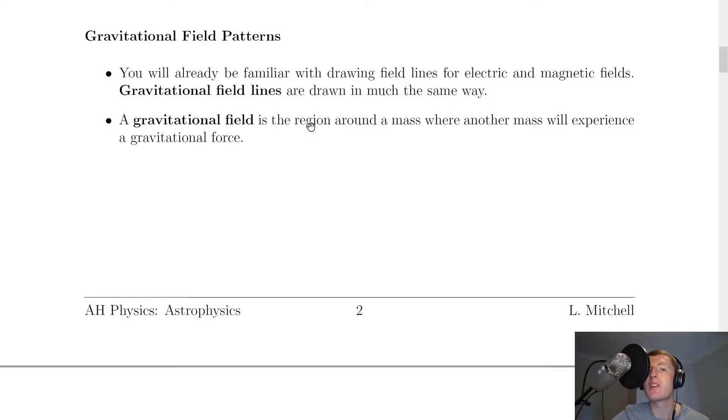We say that a gravitational field is the region around a mass where another mass will experience a gravitational force. If we were talking about electric fields, it would be the region around a charge where another charge experiences an electrical force. So we're wording this in the same way, but we're just saying now that it's a gravitational field and we're talking about masses exerting forces on each other.